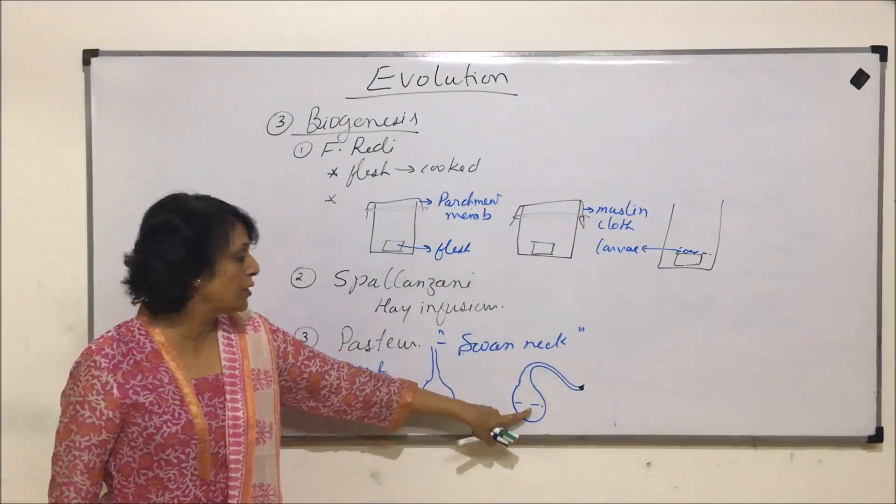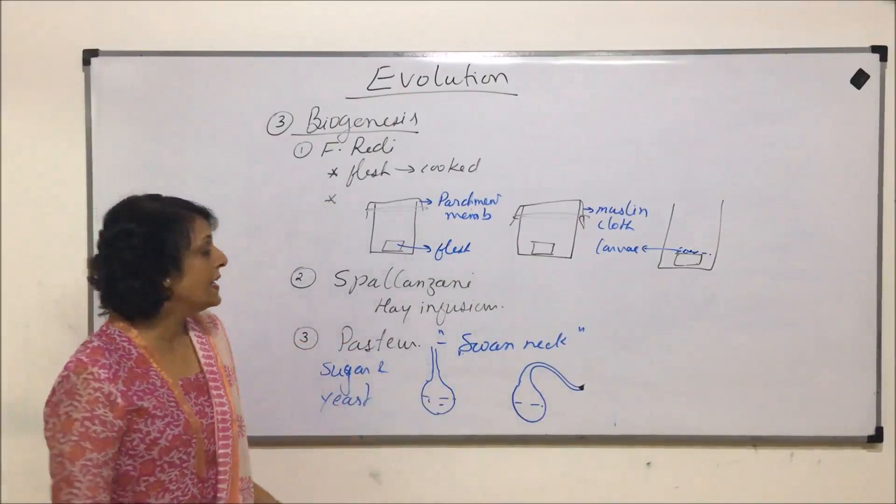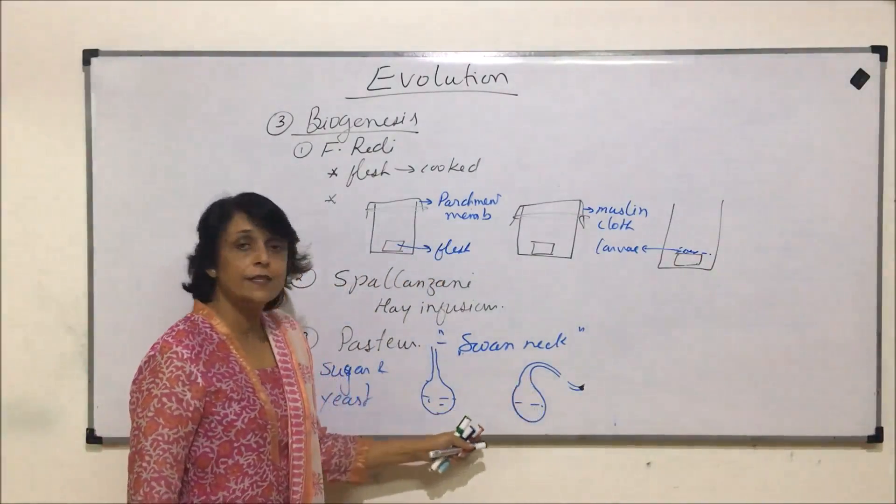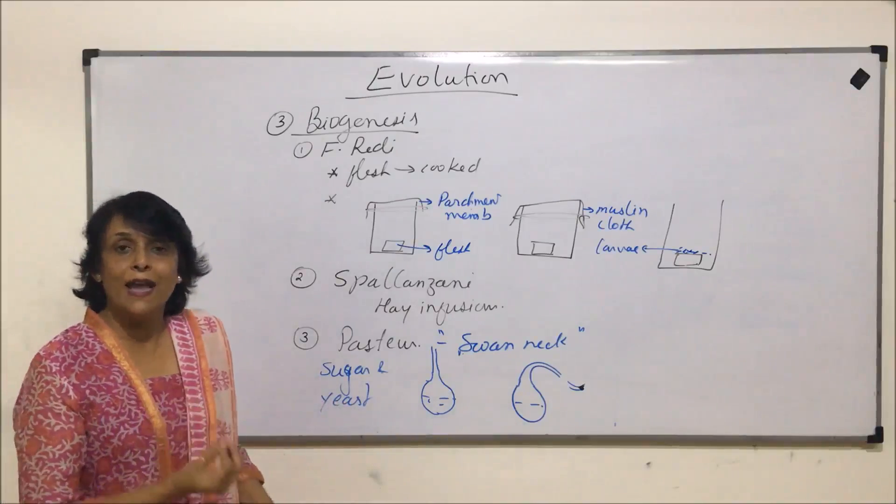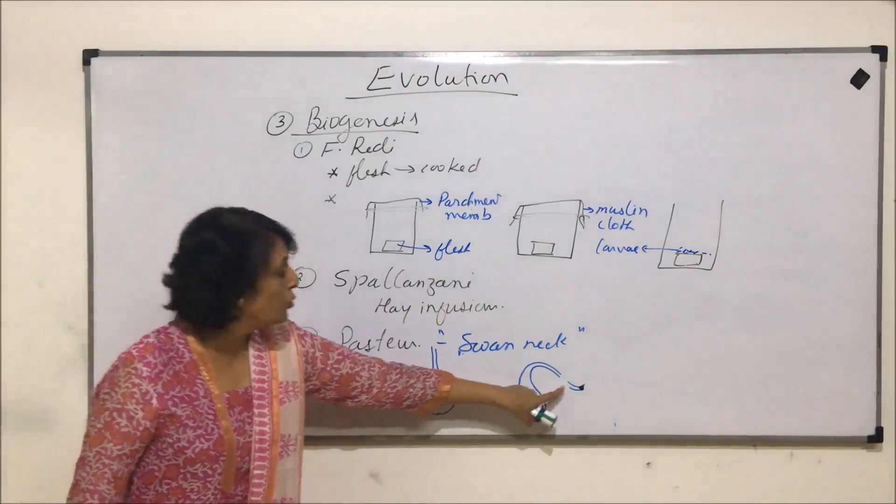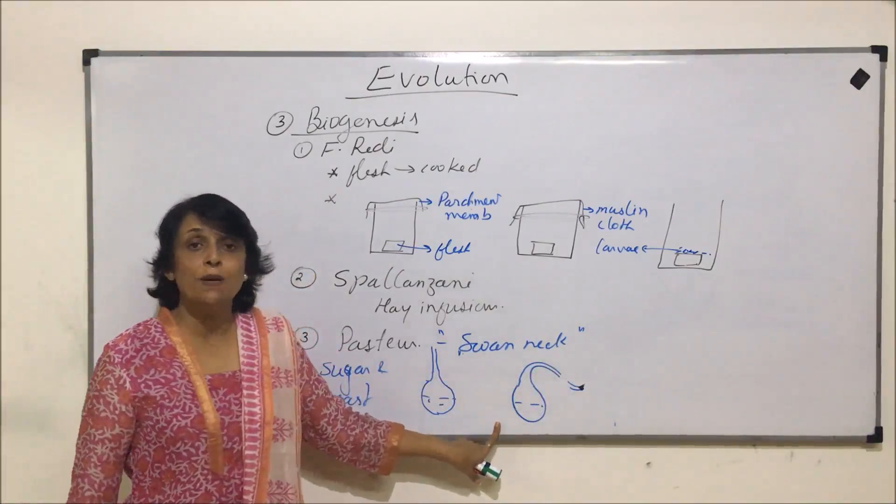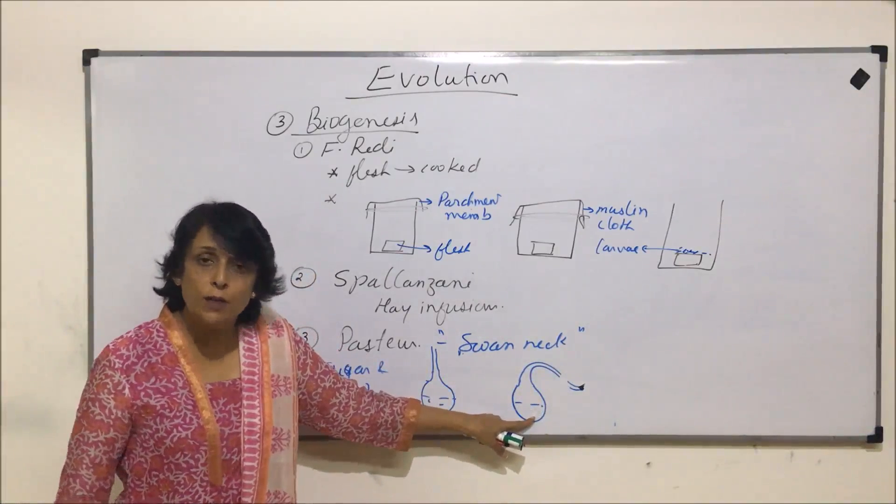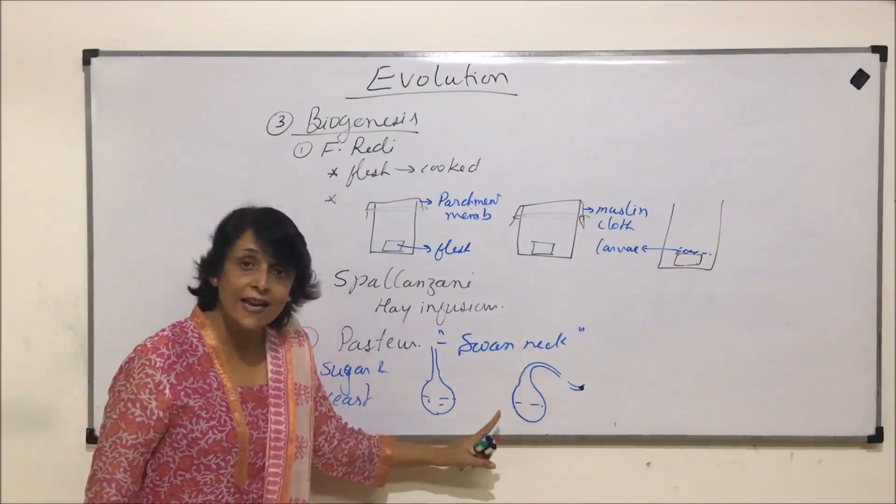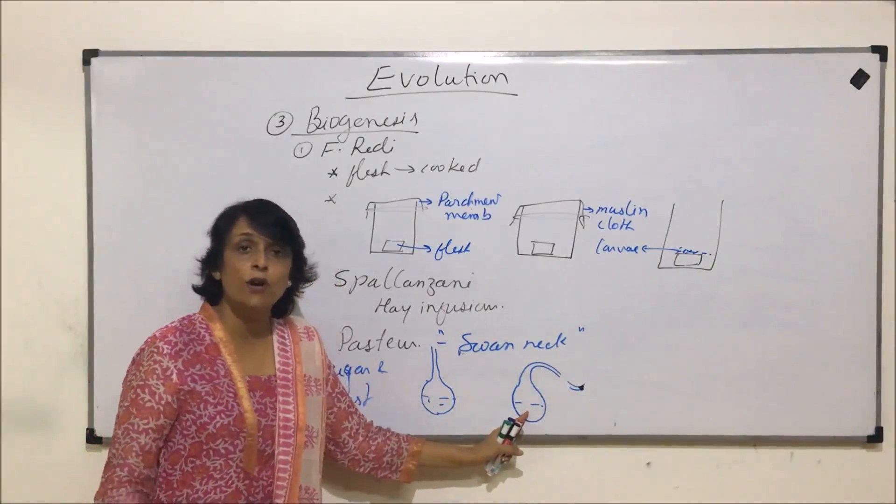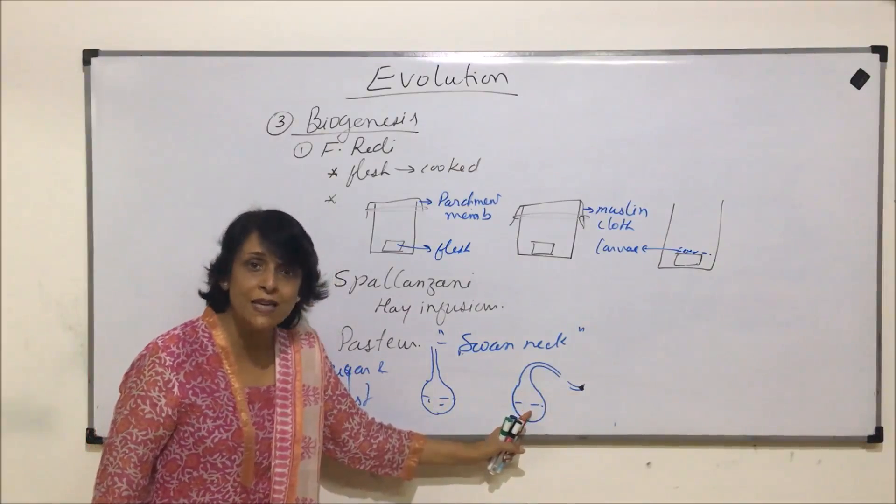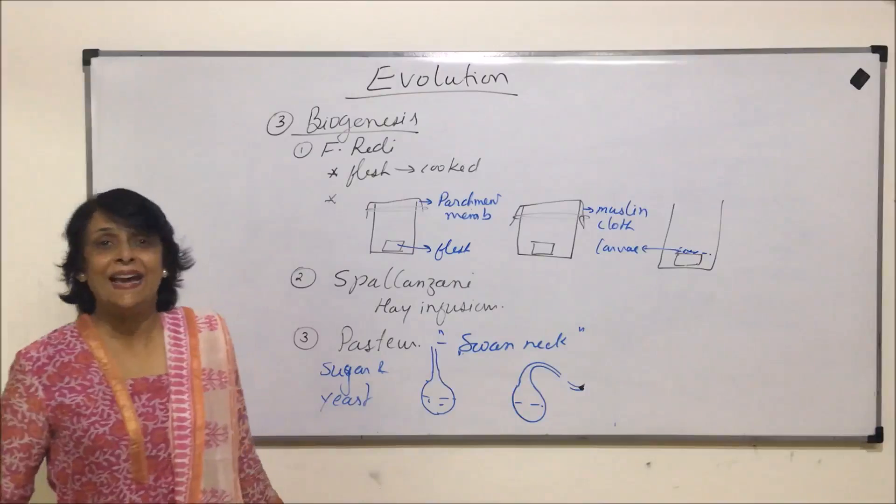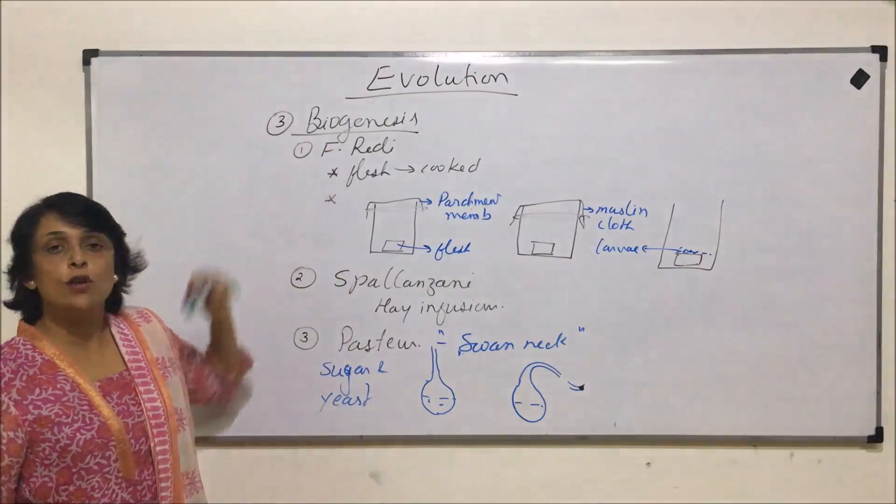As long as this opening was kept sealed, nothing was found on this mixture of sugar and yeast. But when this neck was broken, after some time he found living organisms here because through the air the spores must have entered into this and they would have reproduced or divided here. That means again the life which is coming or getting originated on this medium is coming from the living forms which are already existing. So this theory was of biogenesis.